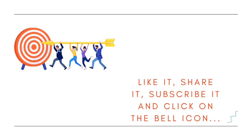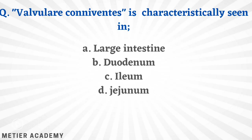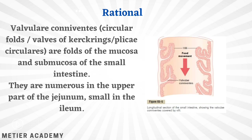Keep motivating us by liking, sharing, and subscribing our videos, and don't forget to click on the bell icon. The first question: valvular conivents is characteristically seen in — large intestine, duodenum, ileum, or jejunum? The correct answer is option D, jejunum.